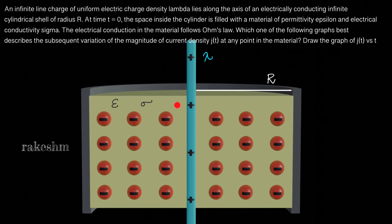This yellow thing I have drawn here is the material, and these are the electrons in the material. The electrical conduction in the material follows Ohm's law. In the exam, four graphs between current density and time were given. We need to choose the correct option. Let us reframe the question: draw the graph of current density versus time.